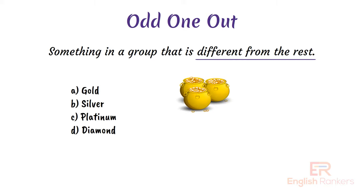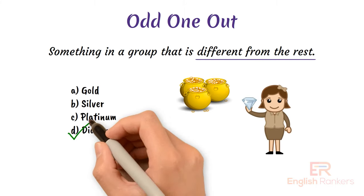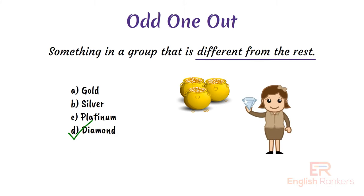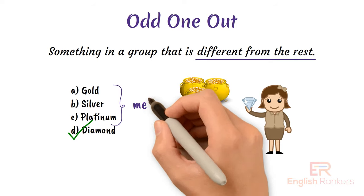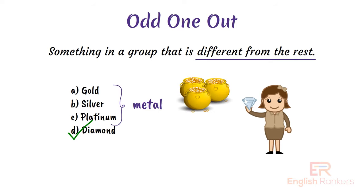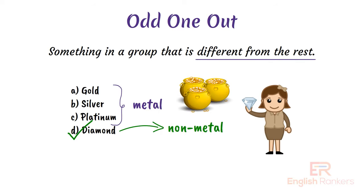Now see another example: select the odd one out from the given options — A) gold, B) silver, C) platinum, D) diamond. The correct answer is diamond. Gold, silver, and platinum are metals, while diamond is not a metal, so diamond is the correct answer.